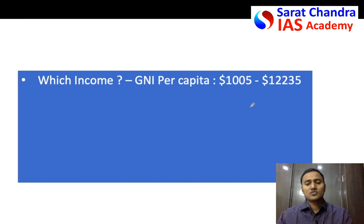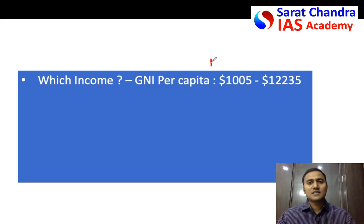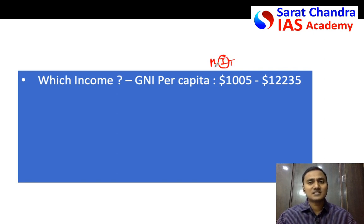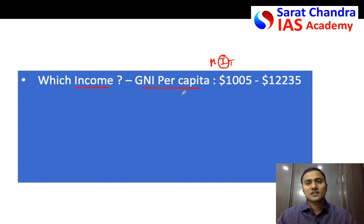Now coming to the answer: in the introduction we should explain what is a middle income trap. But instead of directly jumping to that, first write one or two lines explaining what kind of income they are talking about here. The income here is measured as GNI — gross national income per capita. They are actually measuring the per capita income.